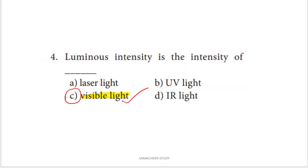Next question: luminous intensity is the intensity of what? Luminous intensity is a base quantity. In luminous intensity, we measure visible light intensity. Among UV, IR, and visible light, luminous intensity refers to visible light. So option C is the right answer.